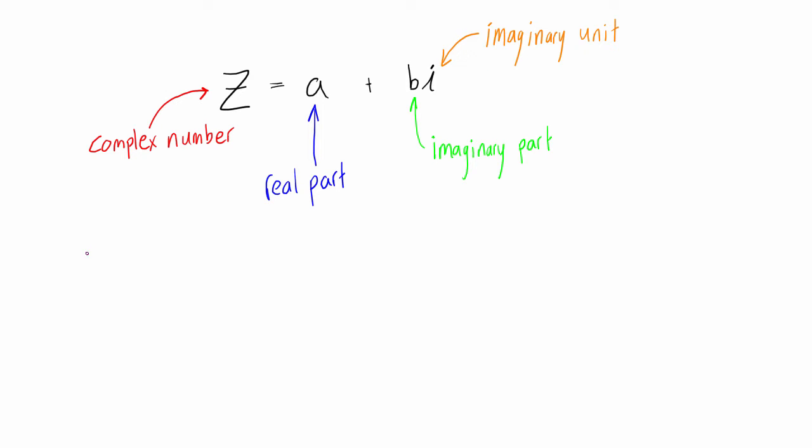The imaginary unit is defined as i equals the square root of negative 1, which also means that i squared is going to equal negative 1.